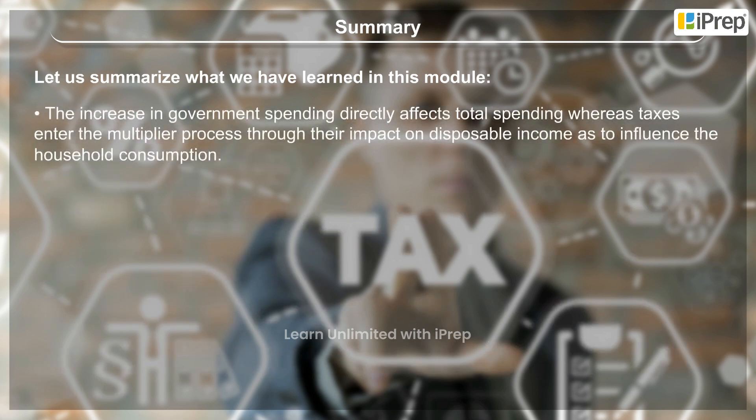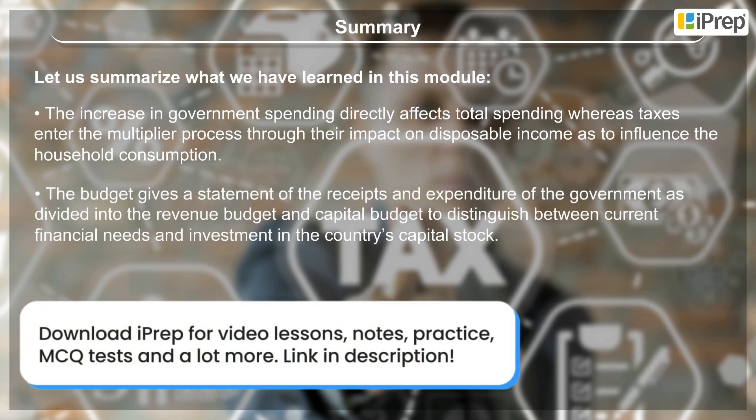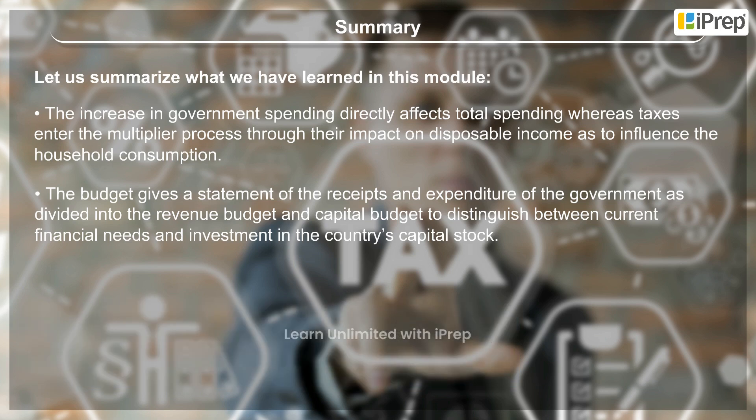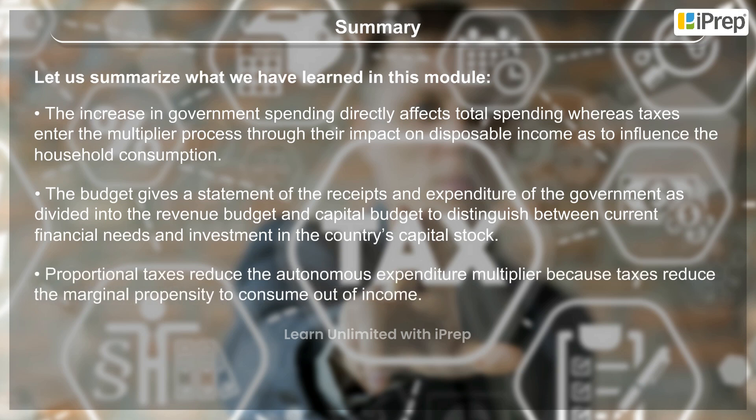The increase in government spending directly affects total spending, whereas taxes enter the multiplier process through their impact on disposable income so as to influence household consumption. The budget gives a statement of the receipts and expenditure of the government, divided into the revenue budget and capital budget to distinguish between current financial needs and investment in the country's capital stock. Proportional taxes reduce the autonomous expenditure multiplier because taxes reduce the marginal propensity to consume out of income.